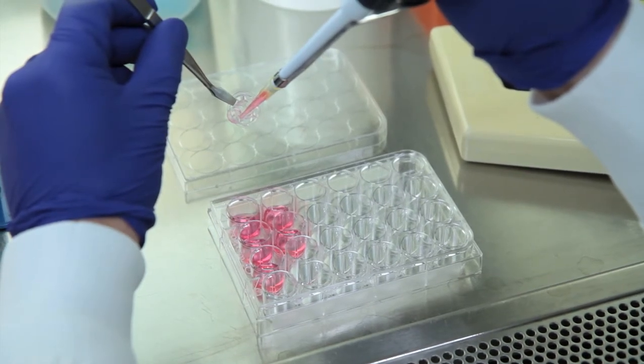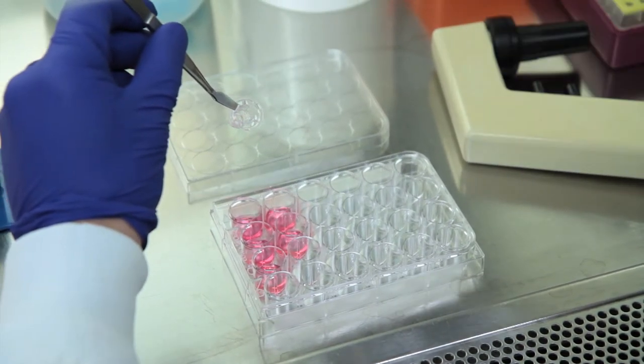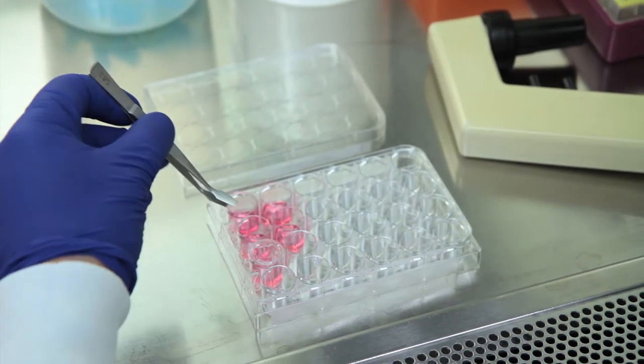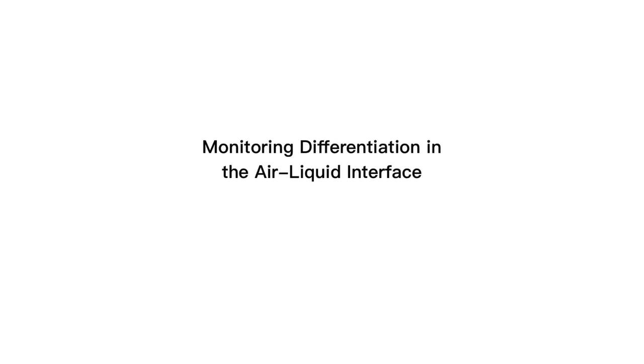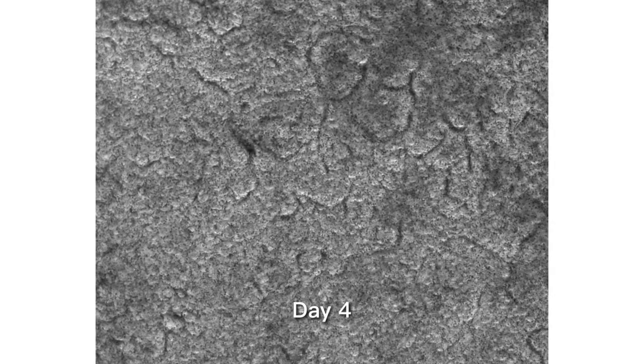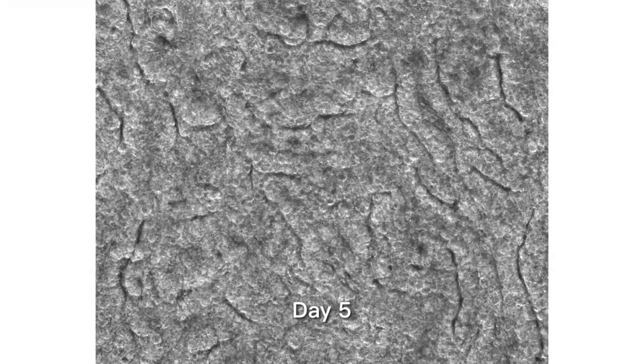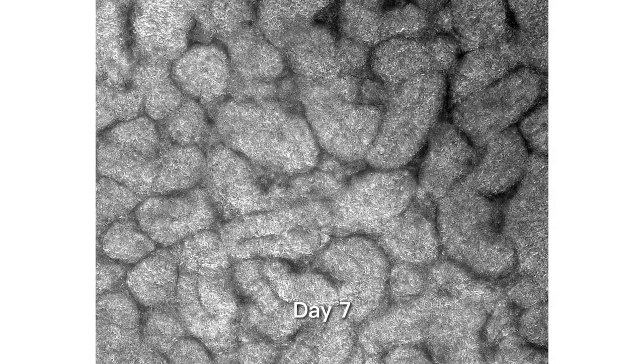A general tip when working with transwell inserts for differentiation is to avoid puncturing the insert membrane. This can occur when coating with Coltrex basement membrane extract, when adding irradiated fibroblasts or adult stem cells, and when exchanging media. One well of a six-well plate of adult stem cells growing in Mimics expansion media will provide enough cells to seed a single well of a 24-well transwell plate. This density was chosen to optimize the speed and efficiency of differentiation.